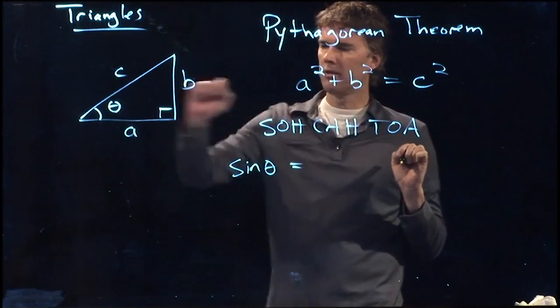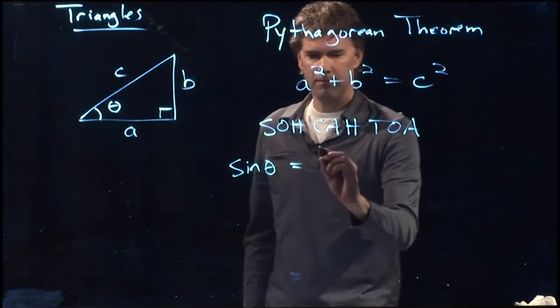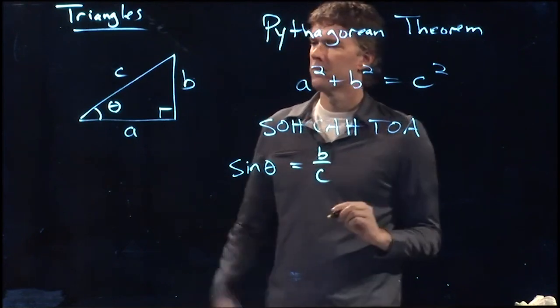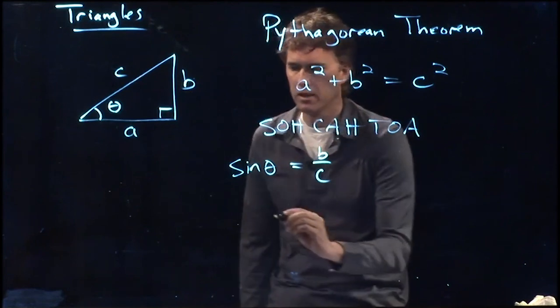Sine is equal to opposite over hypotenuse. In this case, what is opposite the angle? Well, it's b. Sine of theta is opposite over hypotenuse, b over c.